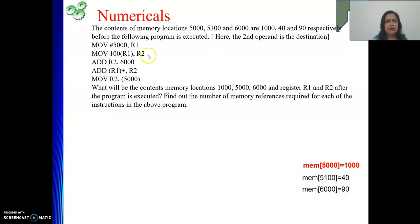The question is, after the program is executed, what will be the value of memory location 1000, 5000, 6000 and the value of register R1, R2. These are your general purpose CPU registers, and we need to calculate the number of memory references for each of the instructions given.